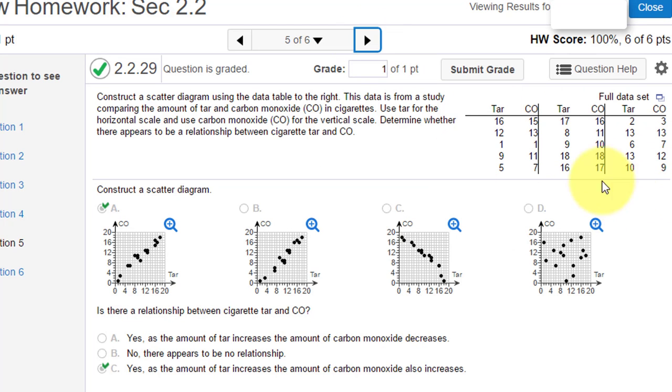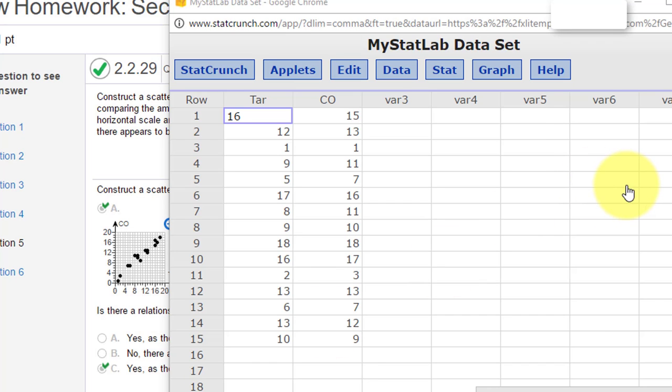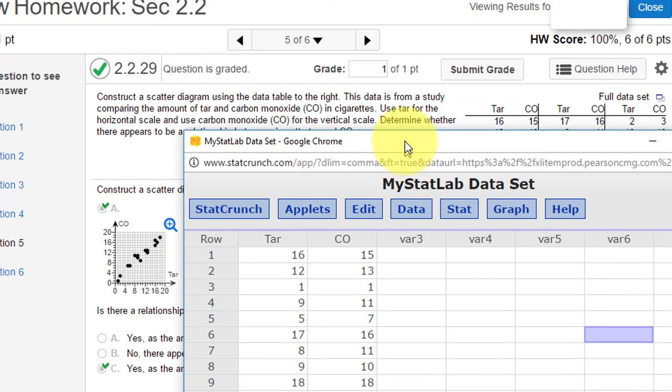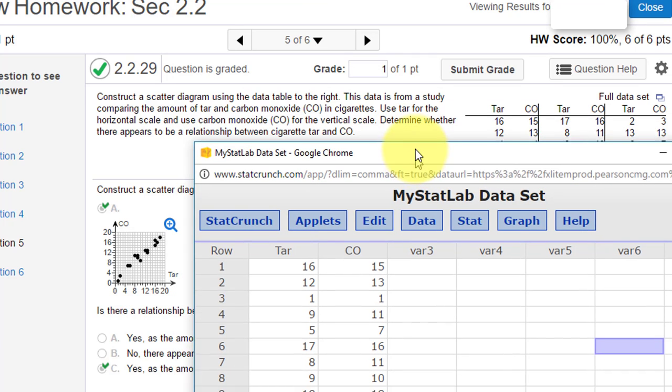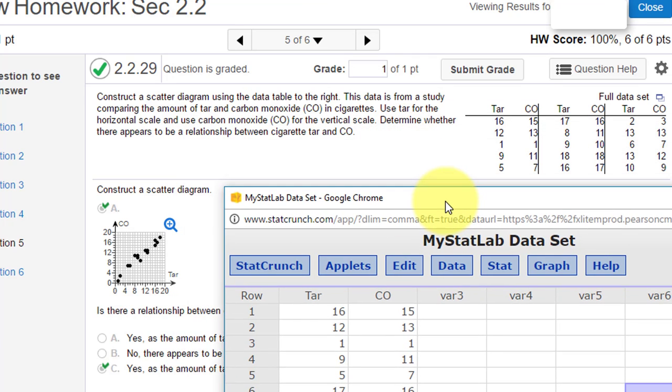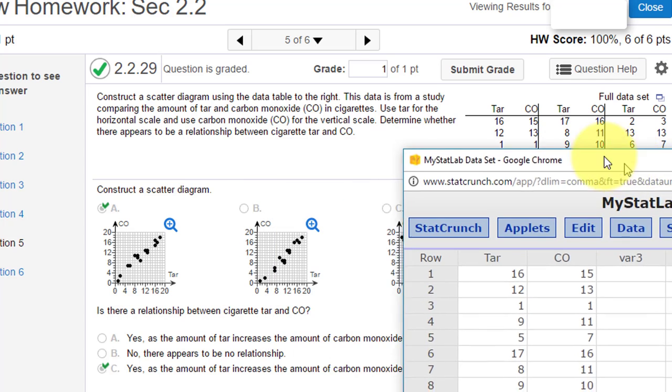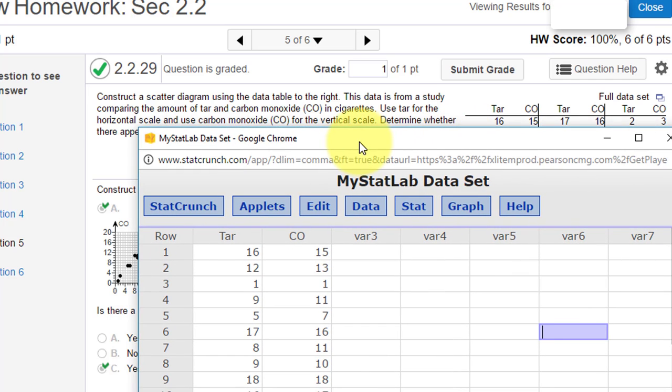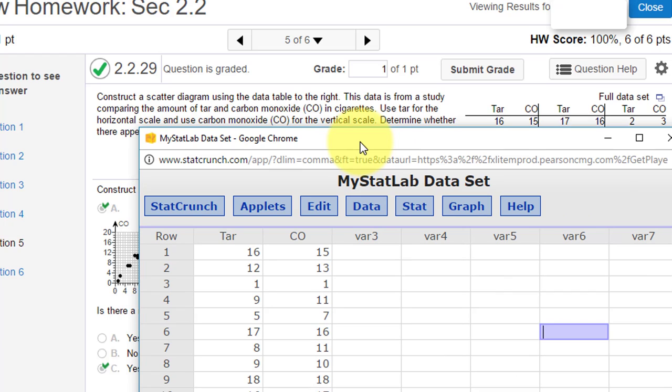Here we've got data again, a pretty complex table. They want us to construct a scatter diagram. So we click on Open in StatCrunch. Sometimes it's a little slow. Okay, it opened up. We've got two columns—one labeled tar and one labeled CO. Carbon monoxide and tar. This is about cigarettes. It says use tar for the horizontal or x-axis and carbon monoxide for the y-axis.